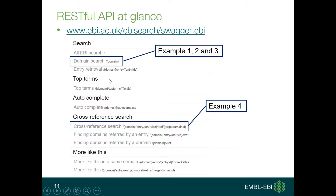On the Swagger page of the EBI Search RESTful API, you can see a collection of methods grouped by type of functionality. There are search methods which allow users to search across all data in EBI Search or on specific data domains — meaning databases and specific resources indexed in EBI Search. You can also retrieve information from those databases, look at frequent top terms, use autocomplete functionality, and navigate through the network of cross-references available.